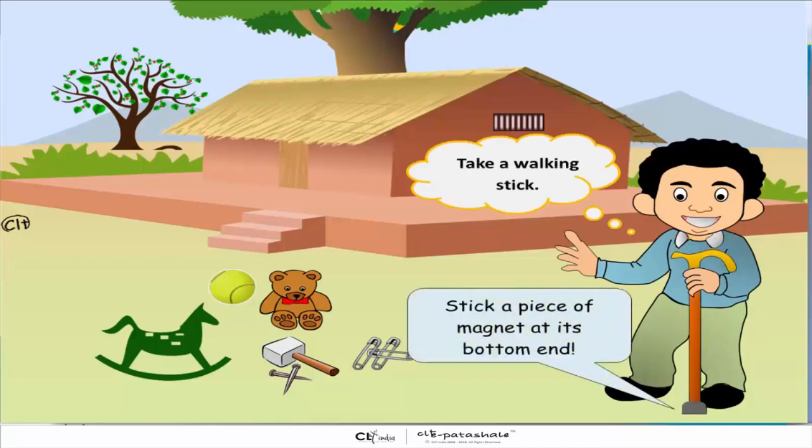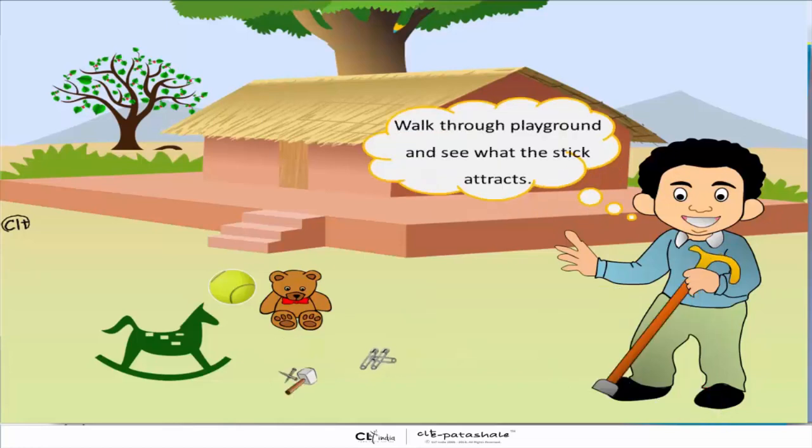Take a walking stick, stick a piece of magnet at its bottom end, walk through the playground and see what the stick can attract.